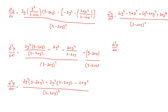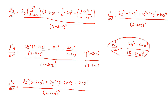Combining like terms in the numerator, we get 12y cubed minus 6xy to the fourth, all over (3 minus 2xy) to the third power. That's the answer. There is also a common factor of 6y cubed in the numerator, so you can factor that out if you'd like — you'll still get the same answer.